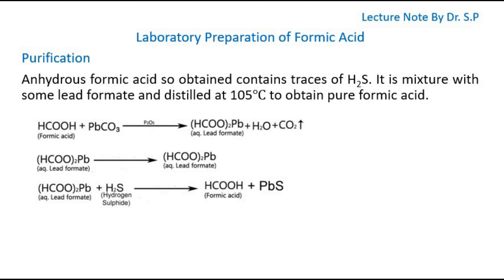The anhydrous formic acid so obtained contains traces of hydrogen sulfide. It is mixed with some lead formate and distilled at 105 degrees Celsius to obtain pure formic acid.